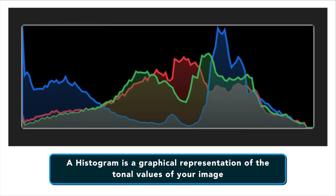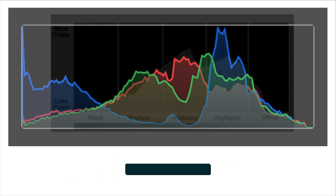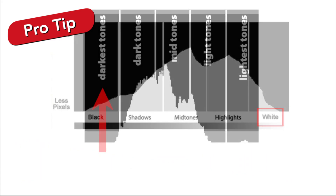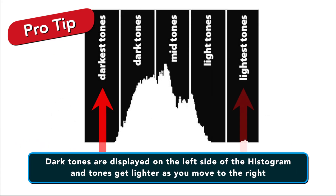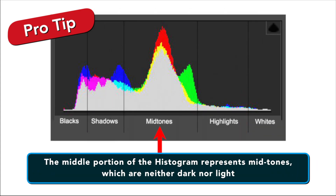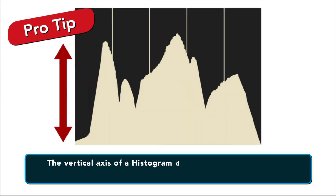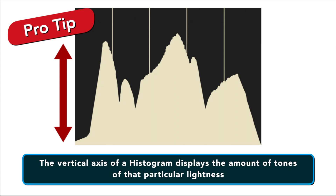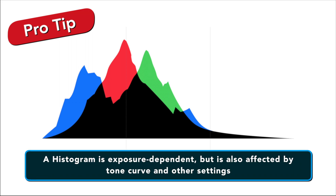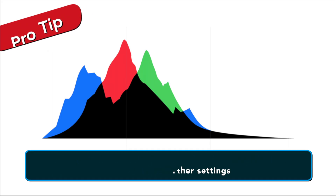A histogram is a graphical representation of the tonal values of your image. In other words, it shows the amount of tones of particular brightness found in your photograph, ranging from black, which is 0% brightness, to white, which is 100% brightness. Dark tones are displayed to the left of the histogram, and as you move rightward the tones get lighter. The middle portion represents midtones, which are neither dark nor light — think of it as gray, maybe. The vertical axis displays the amount of tones of that particular lightness.